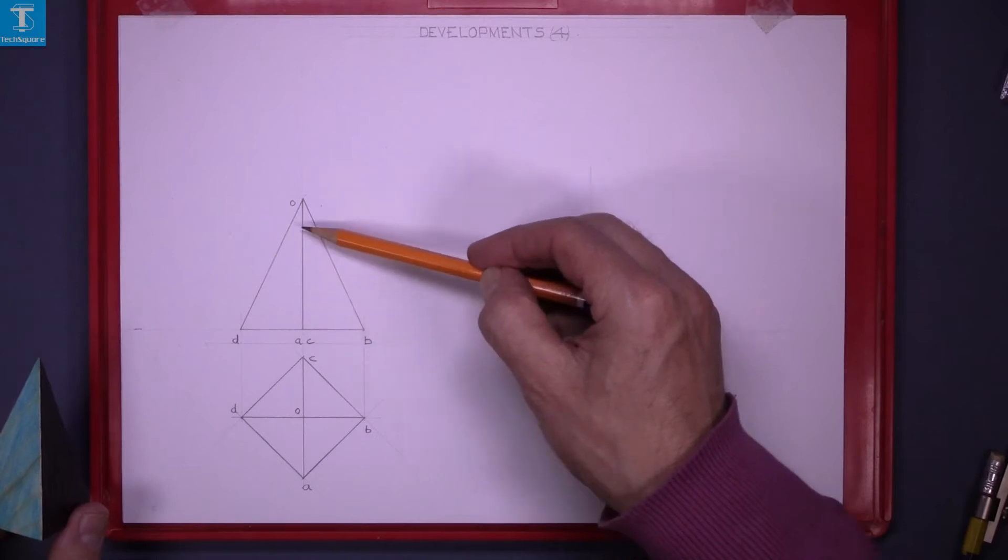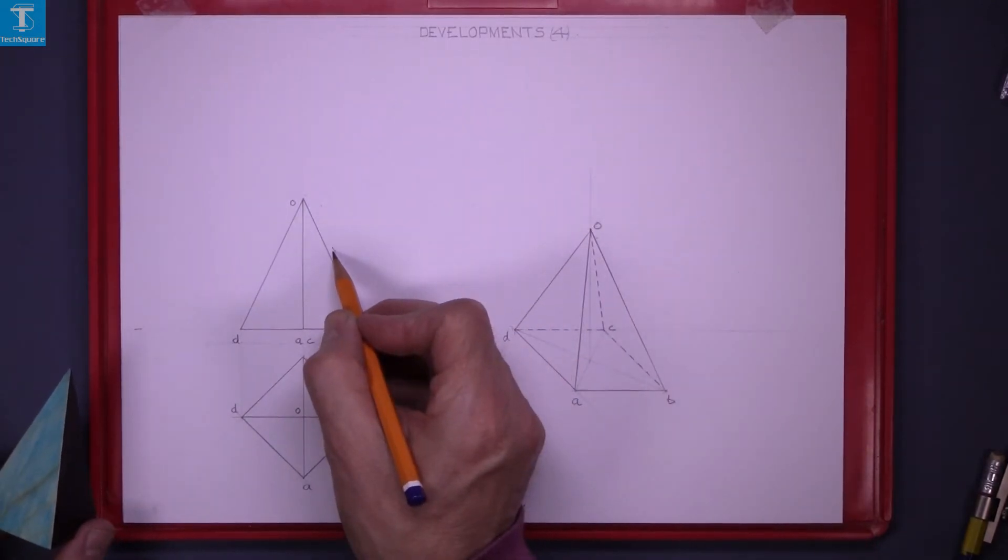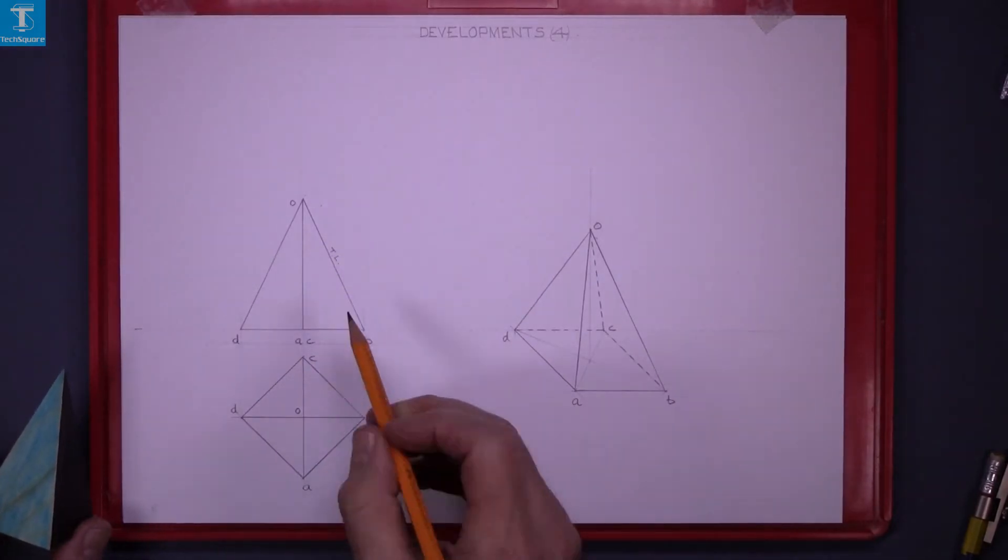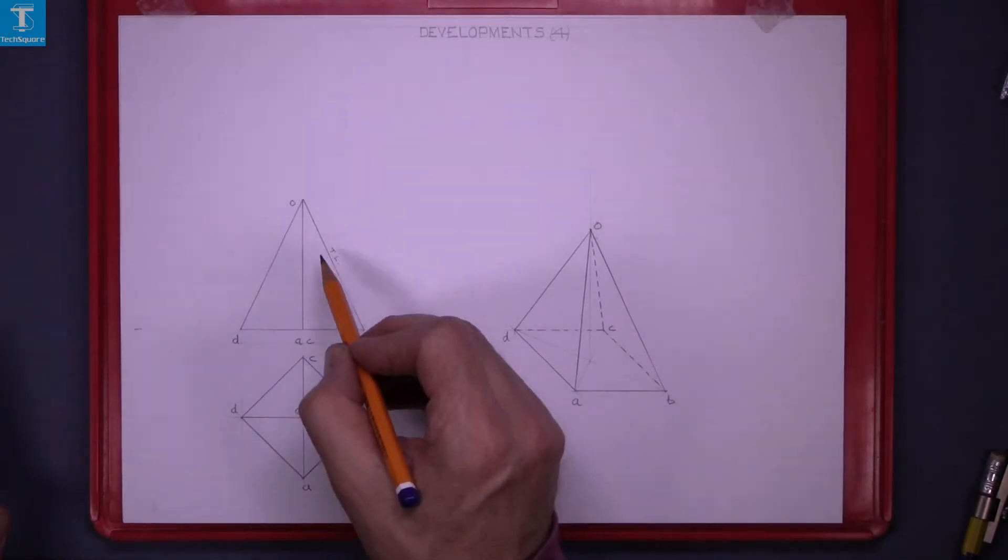This line is shorter because it's not a true length line. This line is a true length line. The reason why that's a true length line is because it's parallel with the xy line in plan. If a line is parallel with the xy line in plan then its elevation will give the true length.